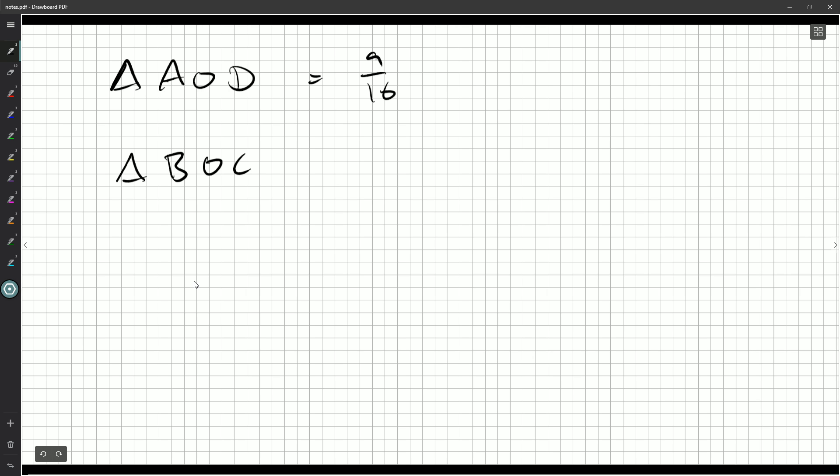But BOC is... Well, this is also nine times the area of triangle BOC. So BOC has an area of one-sixteenth. Nine-sixteenths, one-sixteenth of the full trapezoid, so we'll say. We use our little trapezoid symbol here.